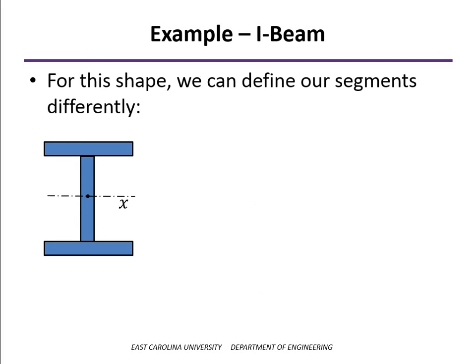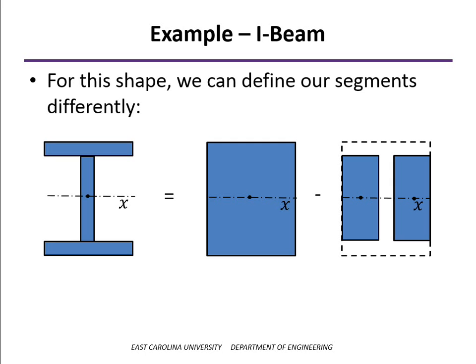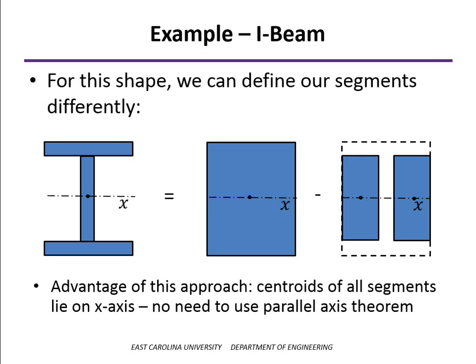Instead of looking at the two flanges separately and the web separately, dividing it up into three pieces, we can take the entire rectangle, as though this were a total solid cross-section, and subtract off these two pieces. The advantage is that all of these segments have centroids that lie along the x-axis. So we don't have to use the parallel axis theorem at all.